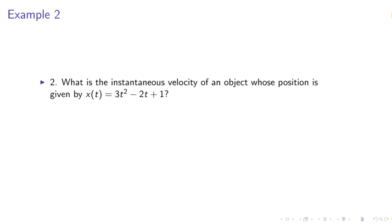Example 2, what is the instantaneous velocity of an object whose position is given by x of t equals 3t squared minus 2t plus 1?